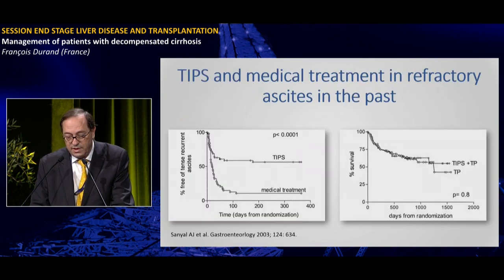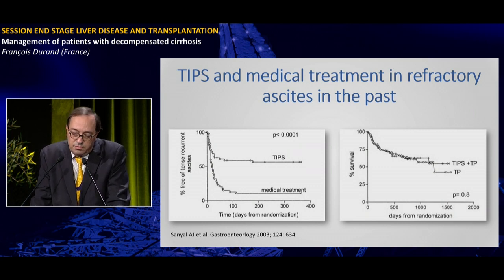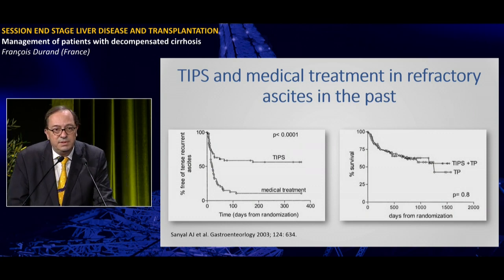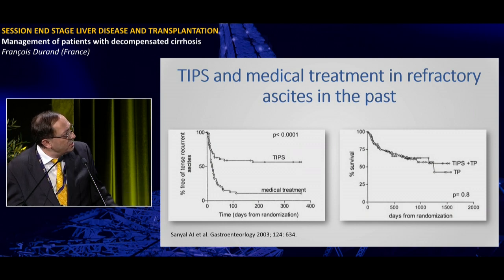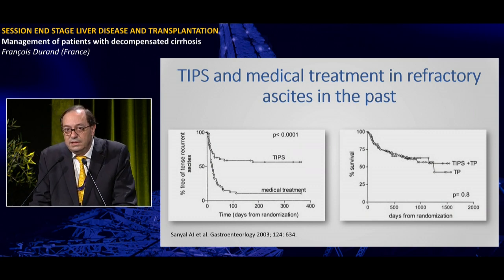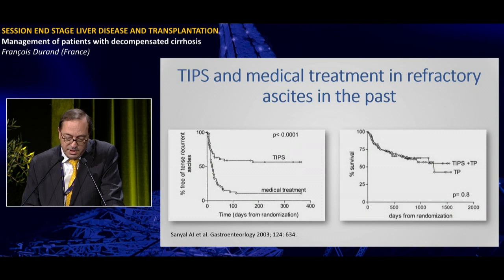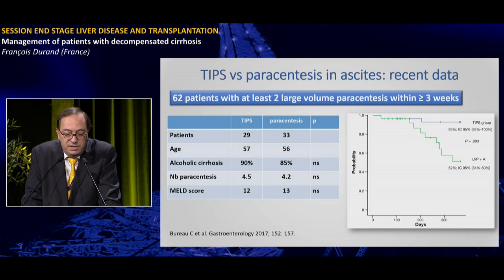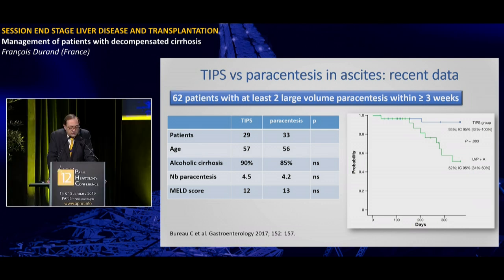Regarding management of refractory ascites, TIPS is one option. Several studies show TIPS is effective at treating refractory ascites compared to medical management, but most did not find evidence of lower mortality with TIPS versus large-volume paracentesis. However, a recent study from Toulouse with 62 patients showed a clear survival advantage in patients receiving TIPS, though these patients had a relatively low MELD score.